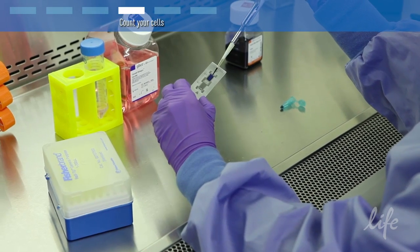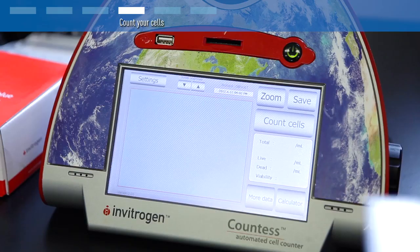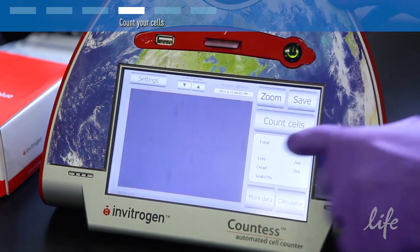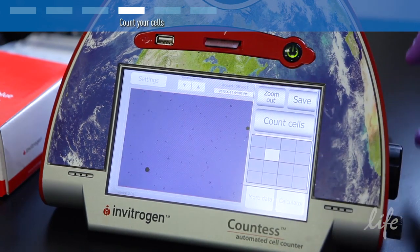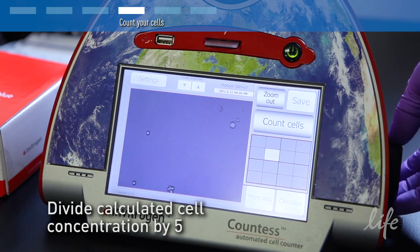Use a Countess automated cell counter or hemocytometer to determine the number of viable cells per ml in the cryovial. Remember that the calculated cell concentration should be divided by 5 because we diluted the original cell stock.